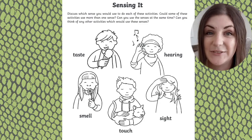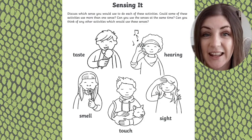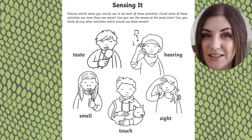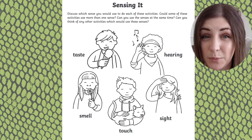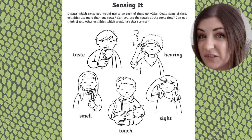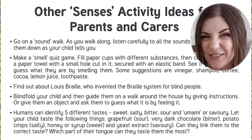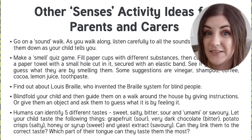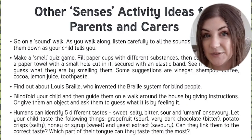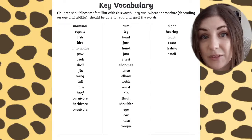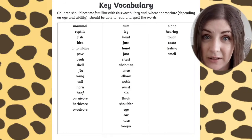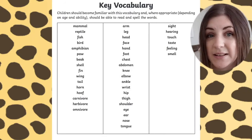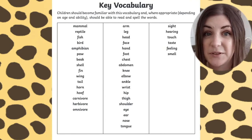This activity focuses on the five senses and linking them to the different parts of the human body. Most of the senses are specific to one body part, whereas touch involves the whole body. We've also included some lovely practical activities to help your child to experience the five senses in lots of different ways. At the end of the booklet we've included a list of vocabulary that children at this stage should be familiar with and, depending on their ability, be able to read and write.